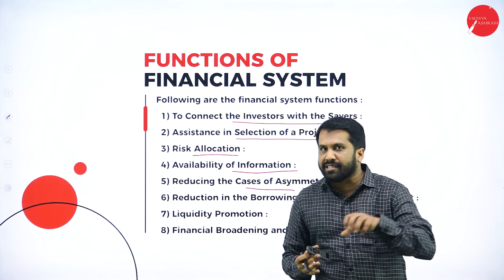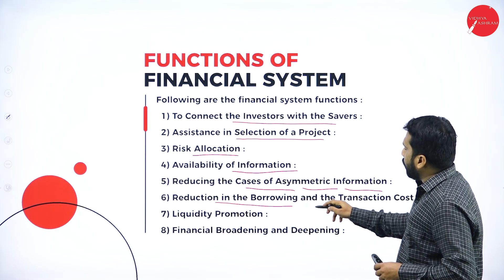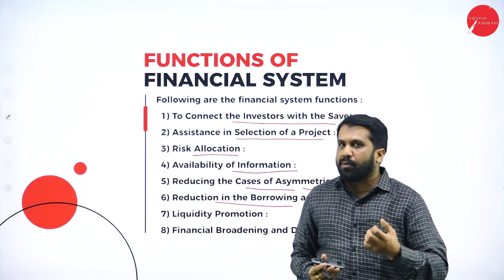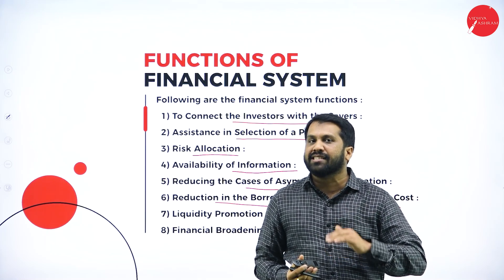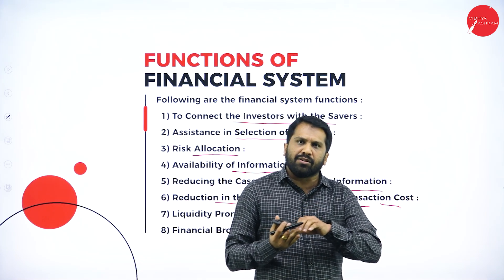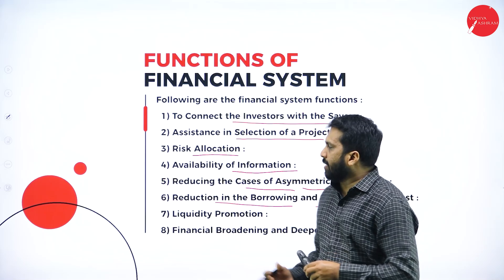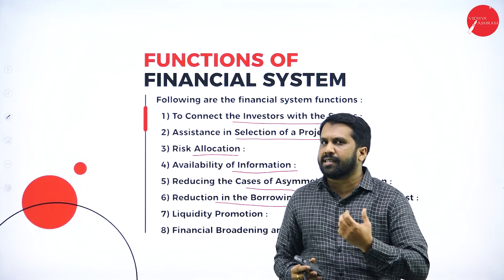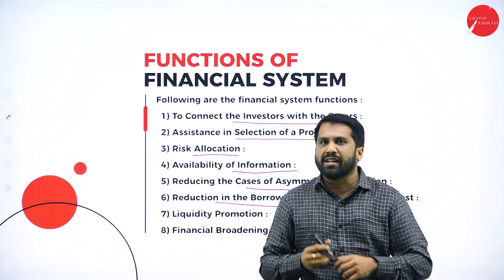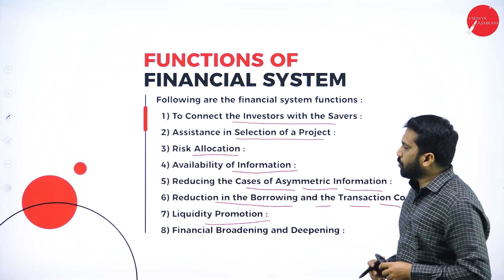Fifth function: reducing asymmetric information — false information, wrong information, and misleading information will not happen if you have a proper financial system. Sixth: reduction in borrowing and transaction costs. If you go with a genuine financial system, the borrowing cost and processing cost will be less. Government or nationalized banks like Corporation Bank or Union Bank have lower borrowing costs compared to private institutions.